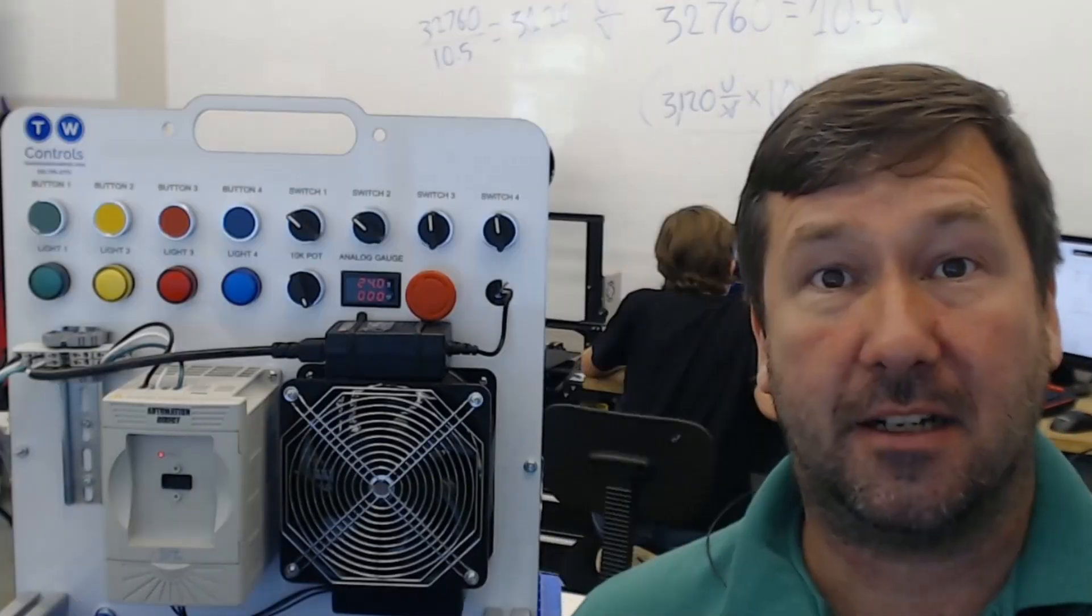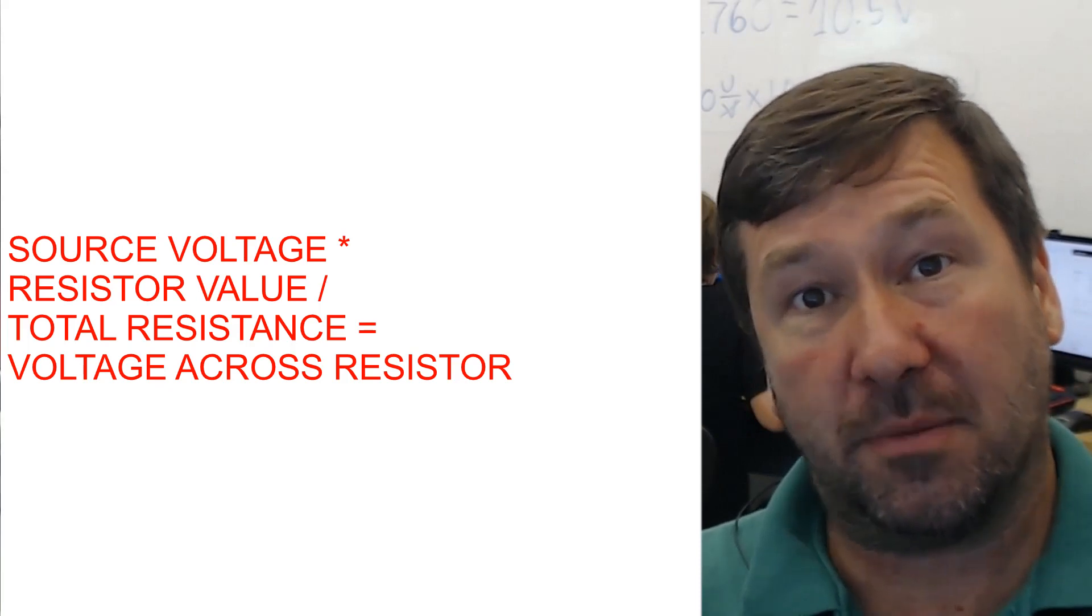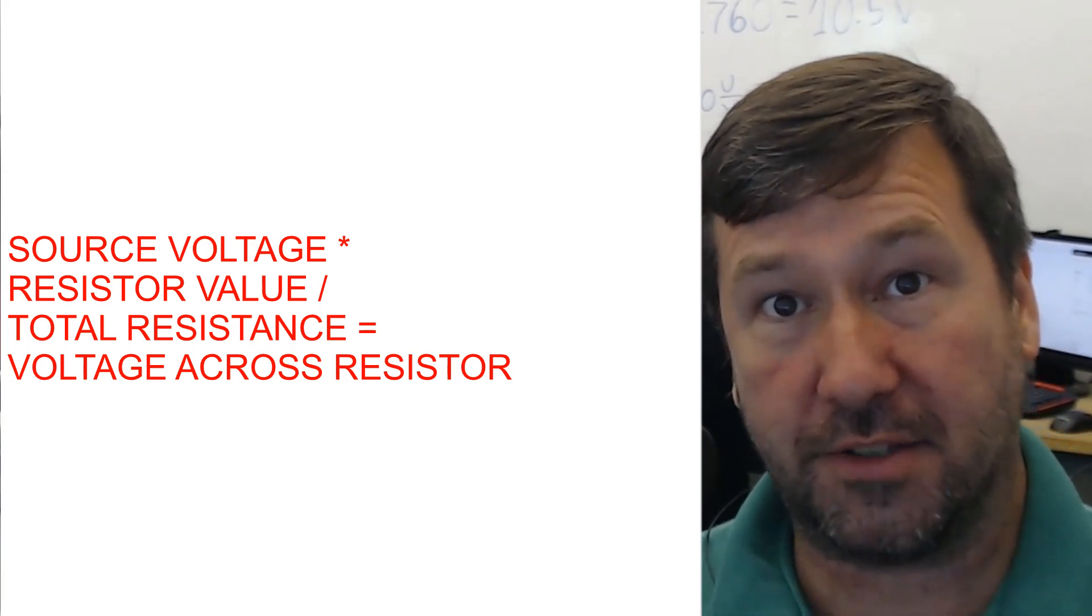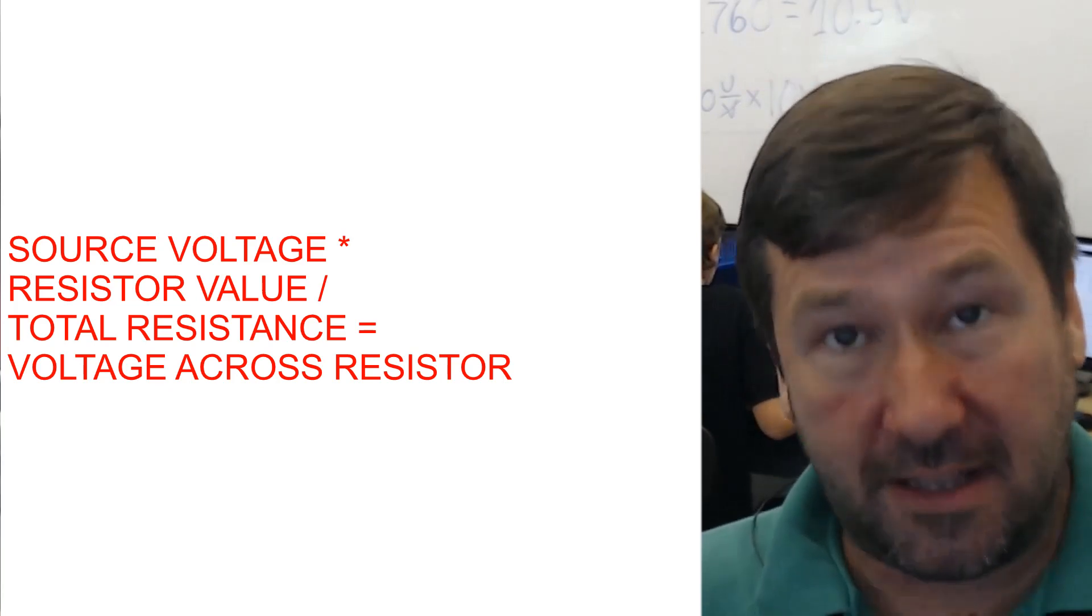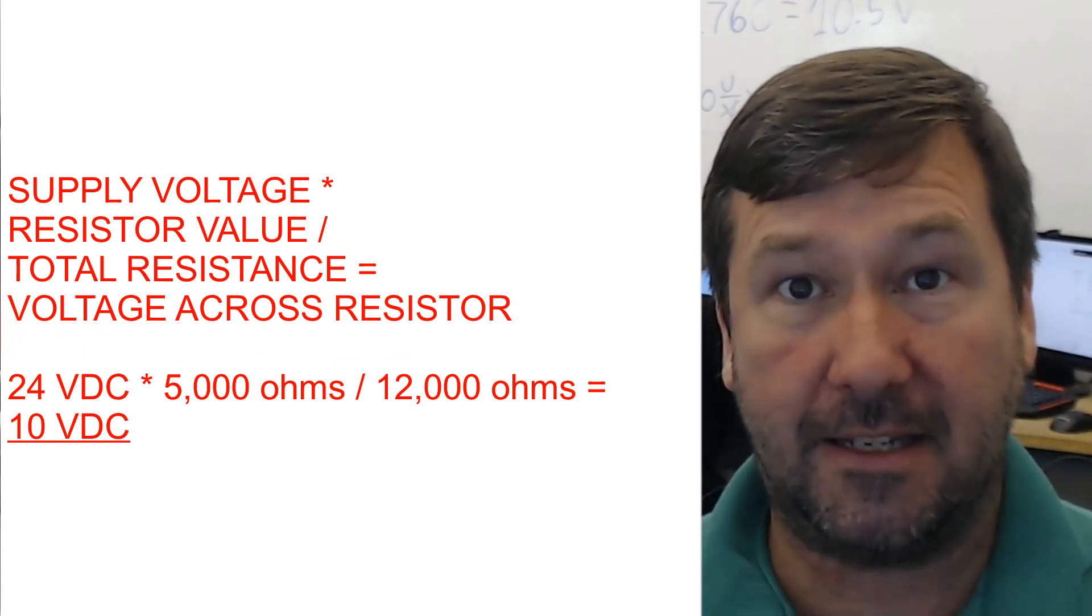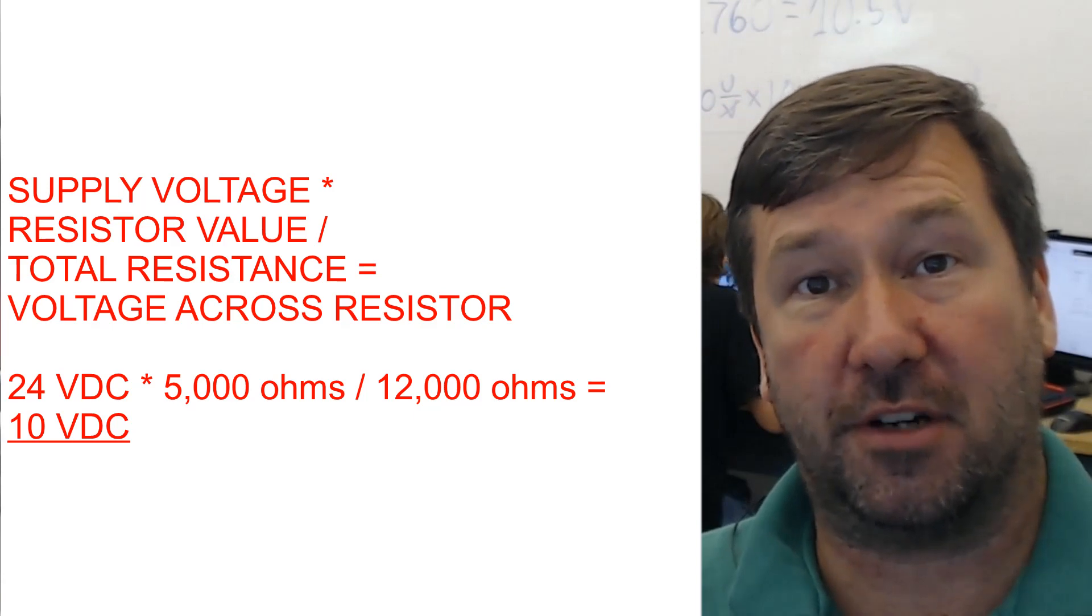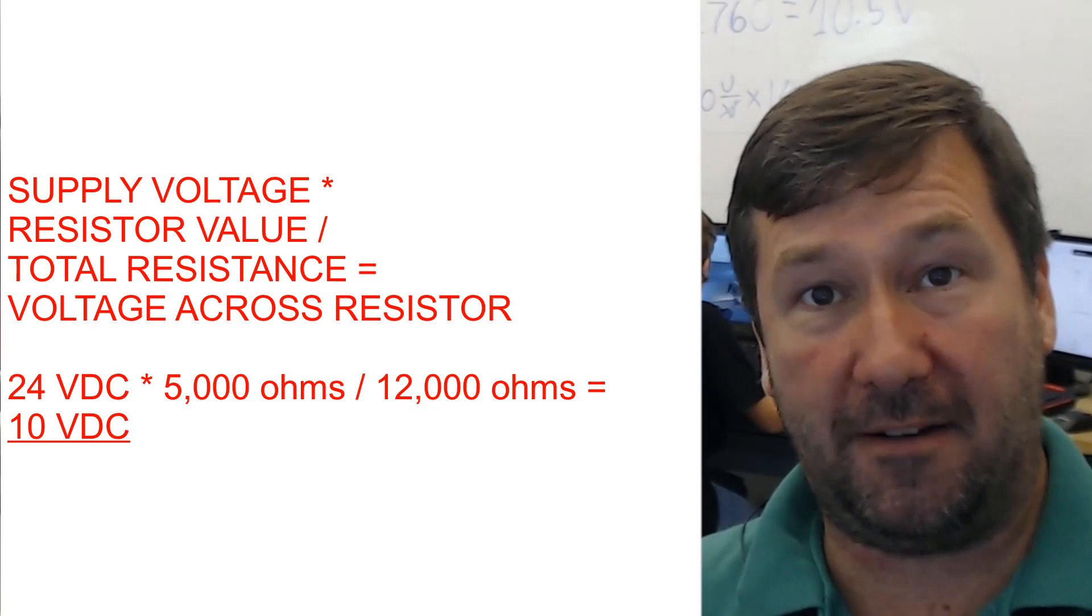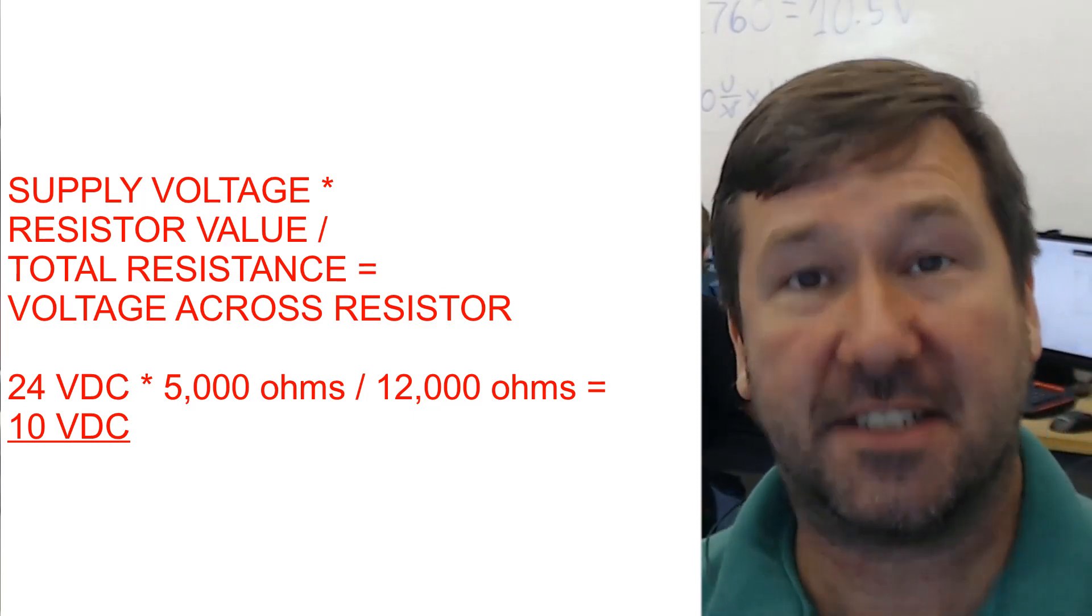So how does this actually work? The quick and fairly unscientific answer is you can take your source voltage and multiply it by the resistor that you're wanting to know the voltage across and divide it by the total resistance of the circuit and you'll get that voltage. So in our case we had the 7k resistor and the 5k resistor for a total circuit resistance of 12k. So we can take our 24, multiply it by 5,000, and divide it by 12,000 and you're going to get 10 volts.